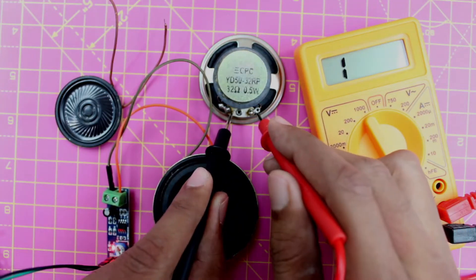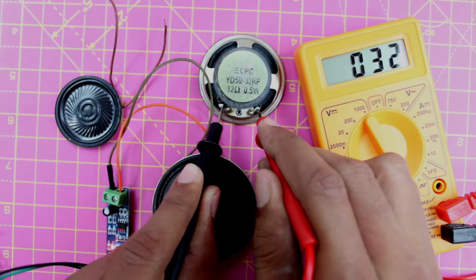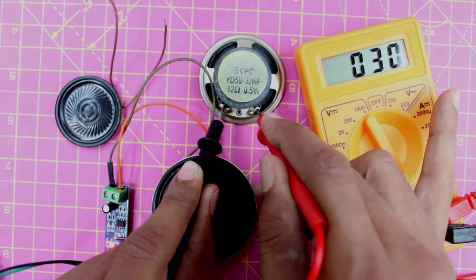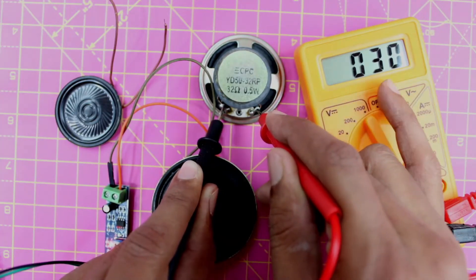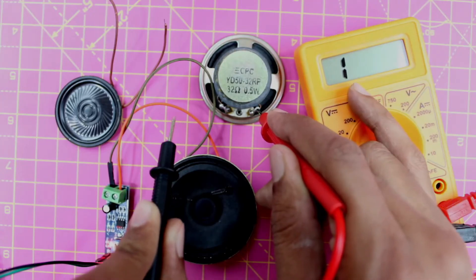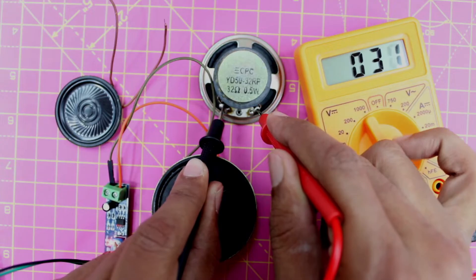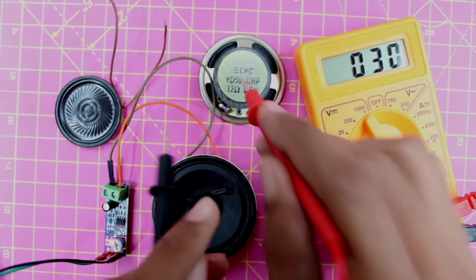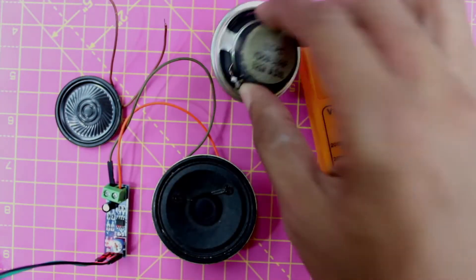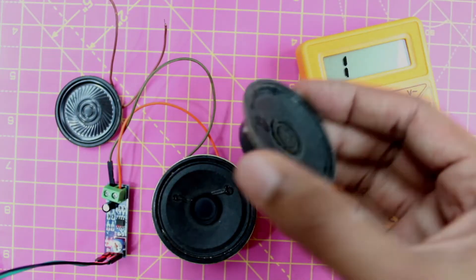When you do that, you should see the value decrease, and you might hear a continuity sound. It's okay if there's no continuity sound, but if the value decreases, it means there's continuity between the two terminals and your speaker's coil is intact and working fine.